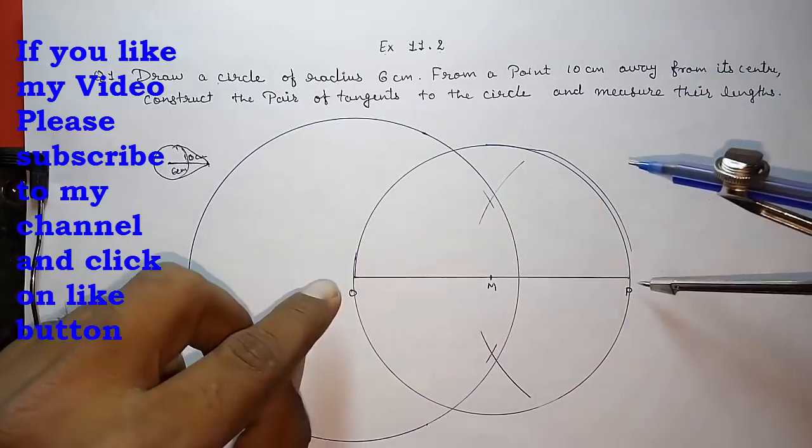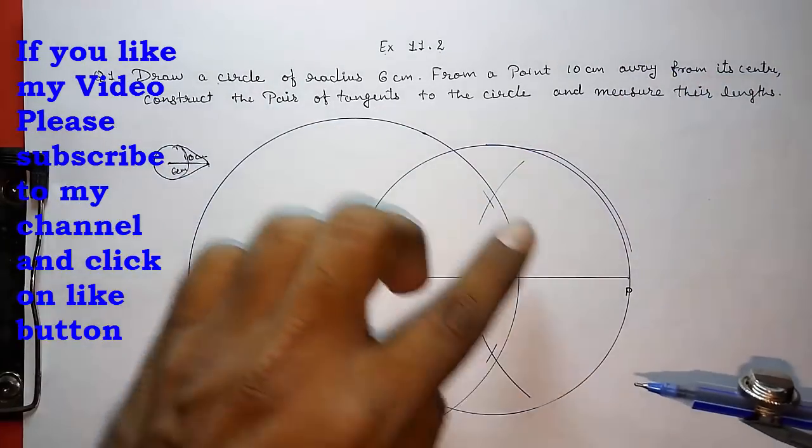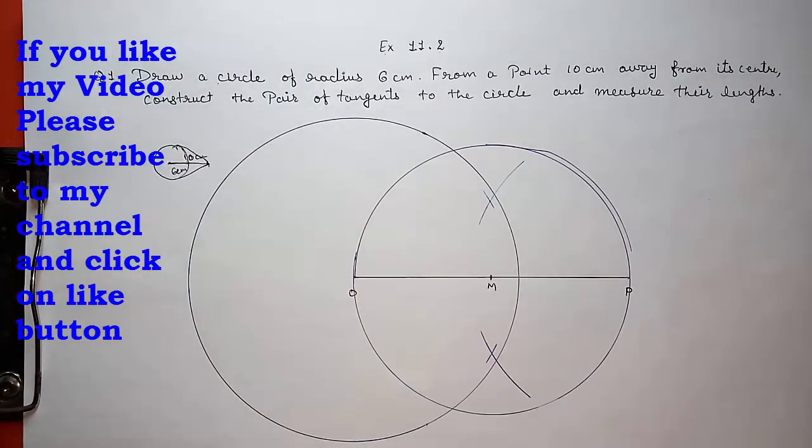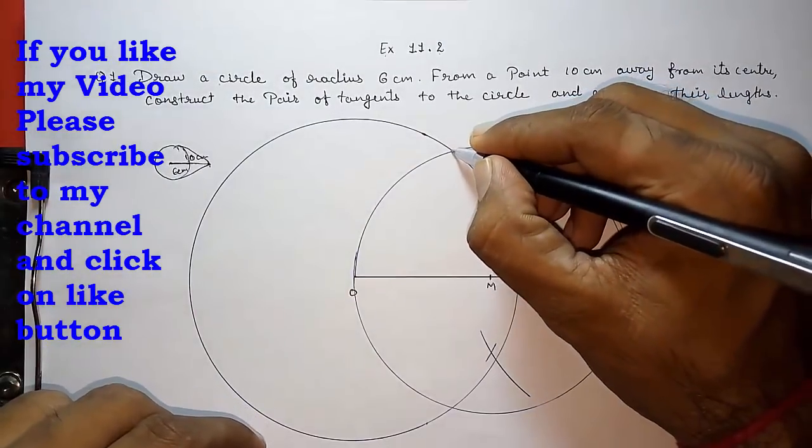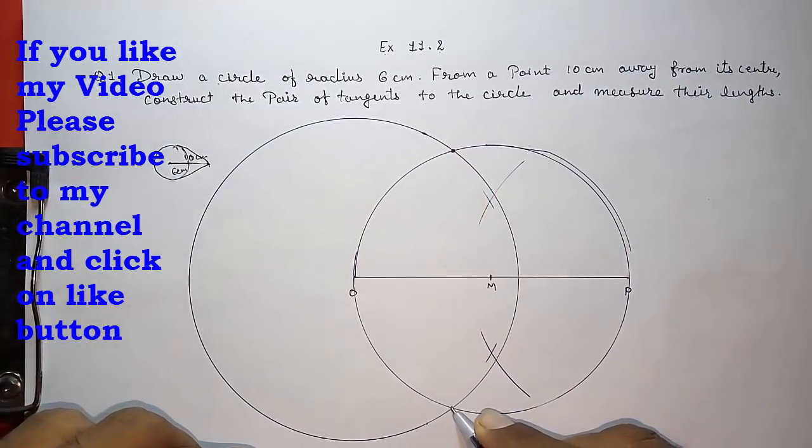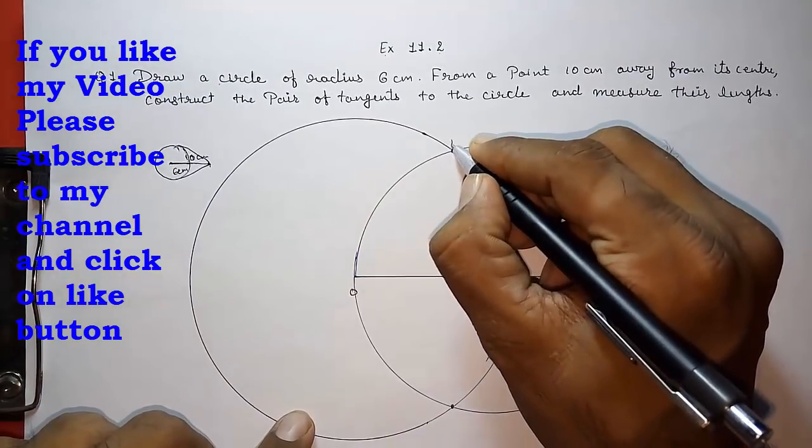Now this is our circle, and this circle is intersecting our six centimeter radius circle at two points. One is here and one is here. Give these points name A and B.